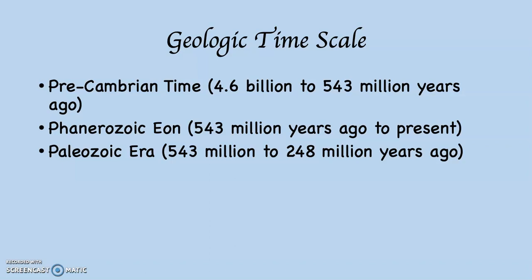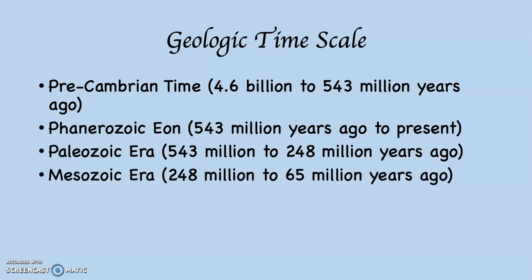Life begins to come up out of the oceans onto land in a fairly substantial way during the Paleozoic. That's followed by the Mesozoic Era — 'Meso' means middle, so this is middle life. This went from 248 million years ago to 65 million years ago. This was the era of the dinosaurs. Most dinosaurs, these gigantic beasts that roamed the planet, were vegetarians.